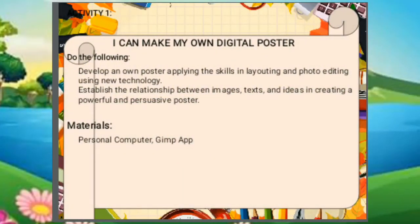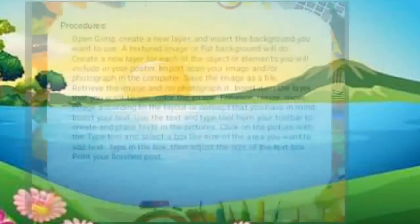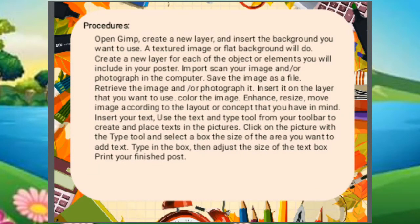Let's now have your activity. Make your own digital poster. In this activity, you will develop your own poster applying the skills in layouting and photo editing using new technology, and establish the relationship between images, text, and ideas in creating a powerful and persuasive poster. The materials for this activity are a personal computer and GIMP application. For step one: open your GIMP, create a new layer, and insert the background you want to use — a textured image or flat background will do.